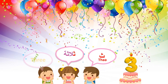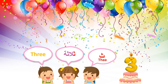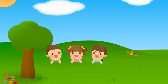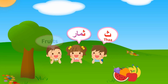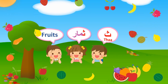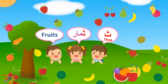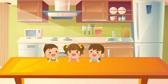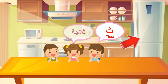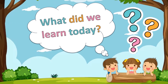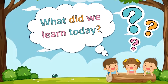Salata. Simar, Prince. Saq, Saq, Saq — Thalaja, Fridge. What did we learn today?